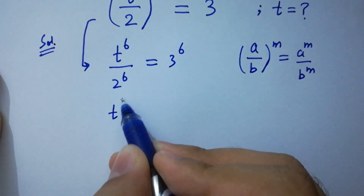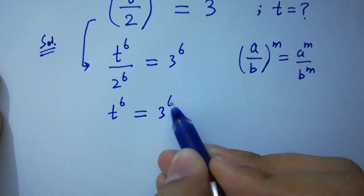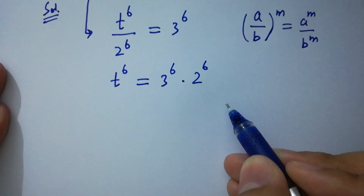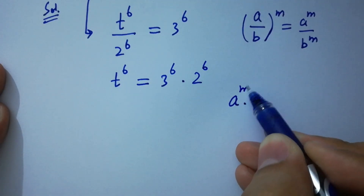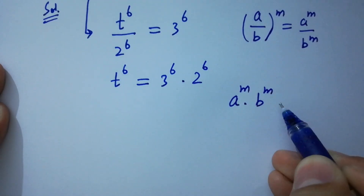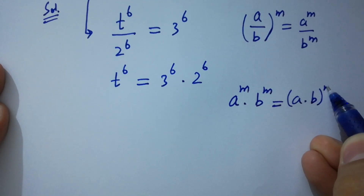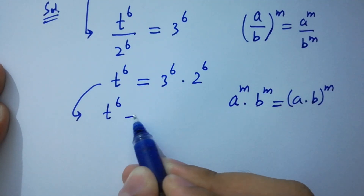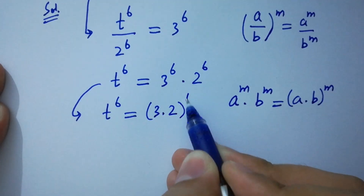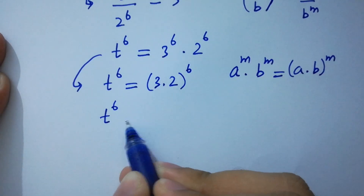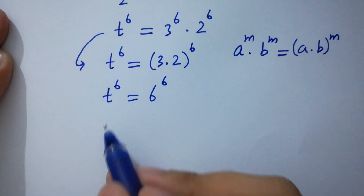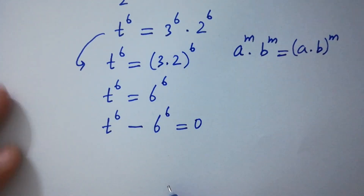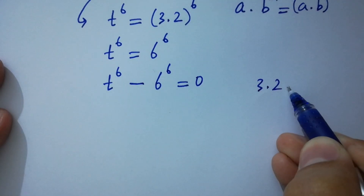Therefore, t^6 = 3^6 × 2^6. Since a^m × b^m = (a×b)^m, we have t^6 = (3×2)^6 = 6^6. This gives us t^6 - 6^6 = 0, since 3 times 2 equals 6.